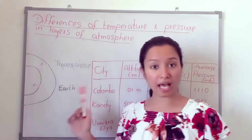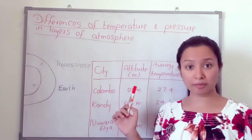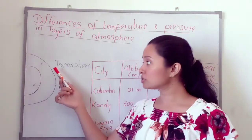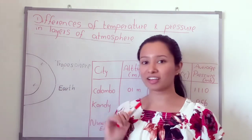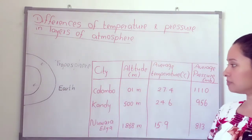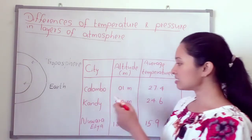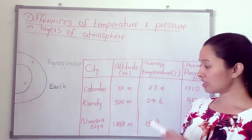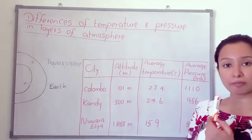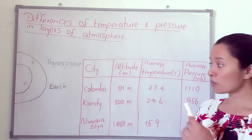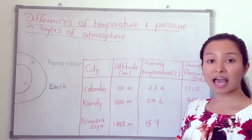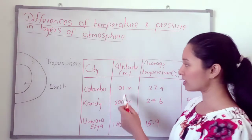What will happen to the temperature and pressure when we go up through the troposphere? Look at this table. These are some cities, and they show the temperature and pressure differences when we go up through the troposphere according to altitude.